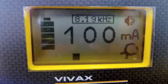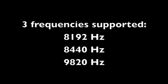The transmitter, when turned on, will recognize that it is connected to a clamp. A transmitter using a clamp only supports three frequencies: 8192, 8440, and 9820 Hz.